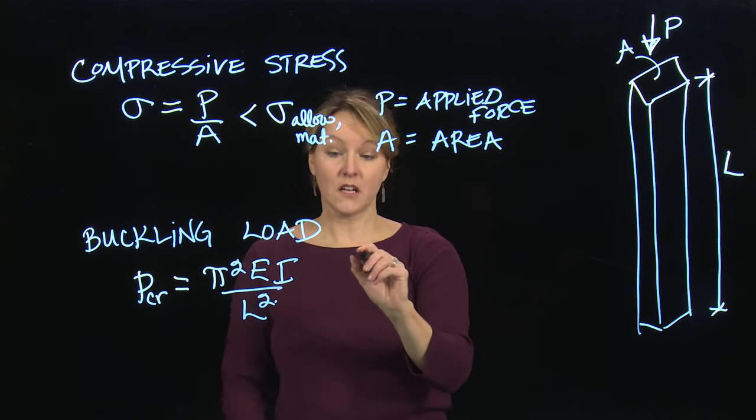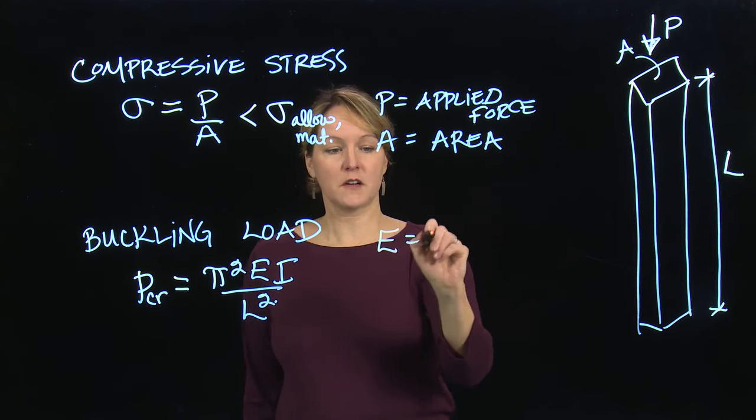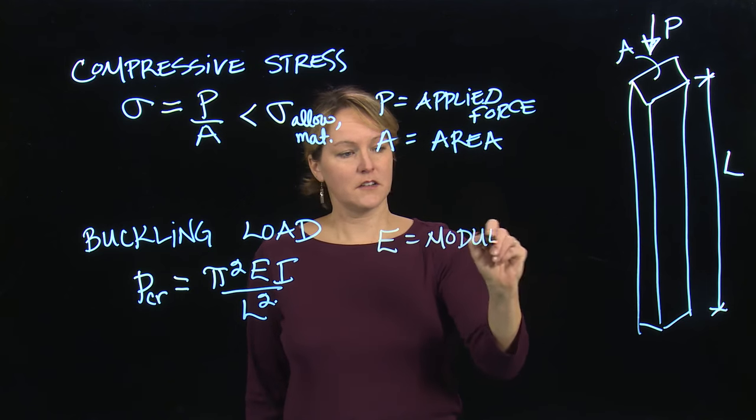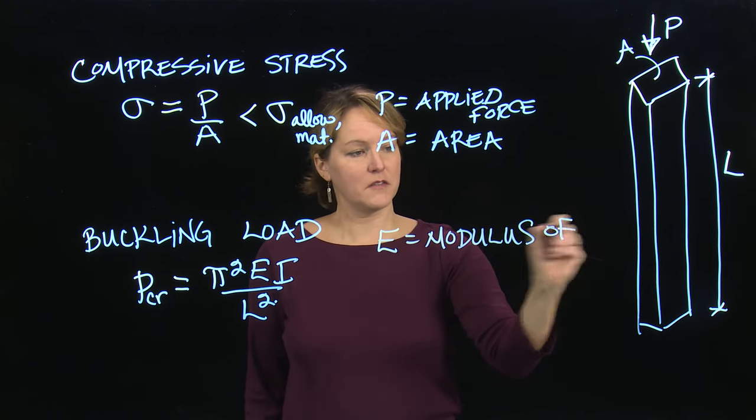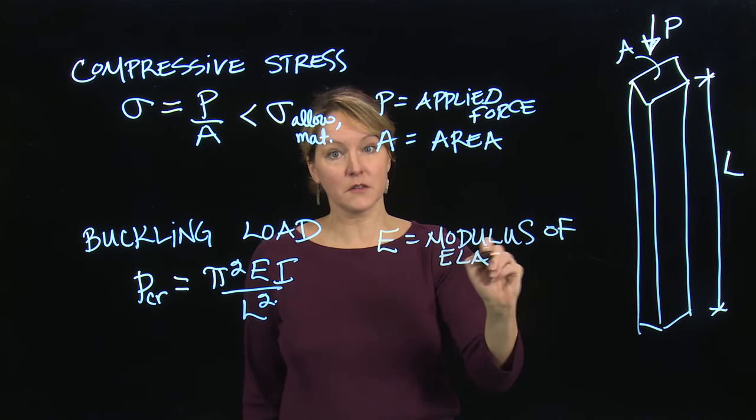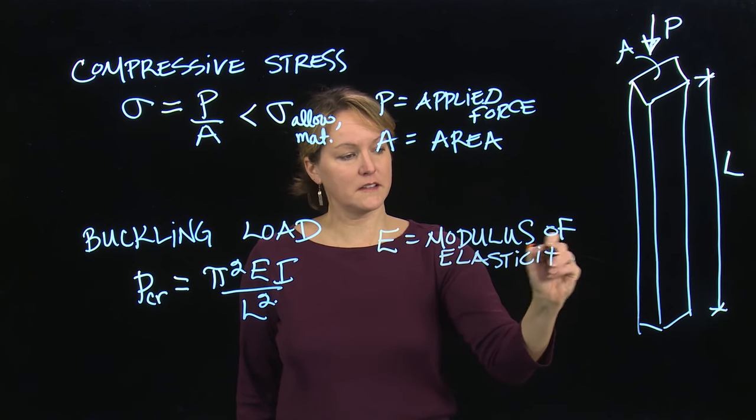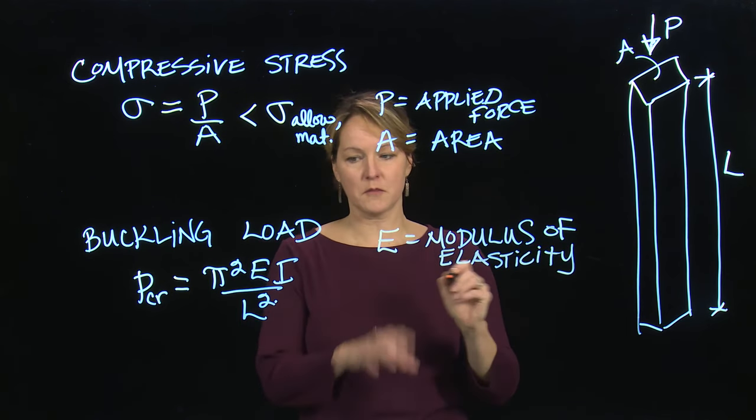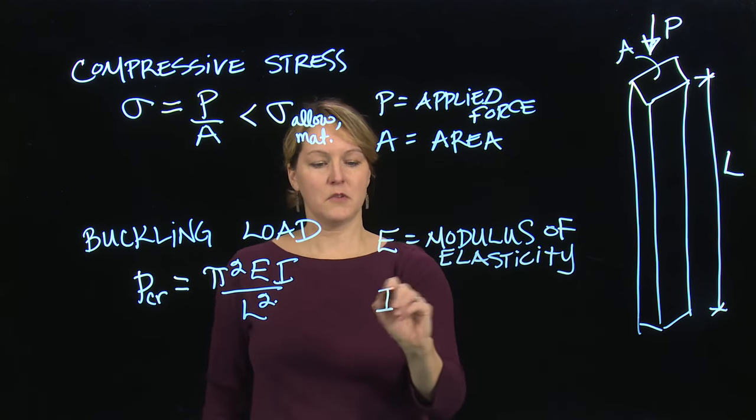Pi is a constant. We have E, which is our modulus of elasticity. Just as a reminder, that's a function of the material. So different materials will have different modulus of elasticity values. Steel, again, will have a higher modulus than, say, wood.